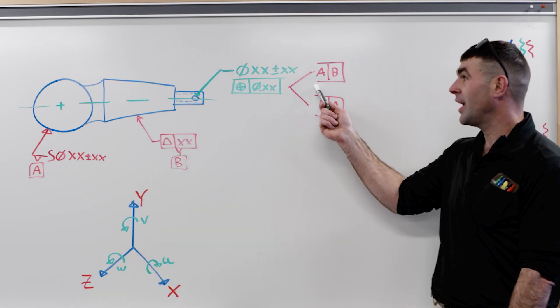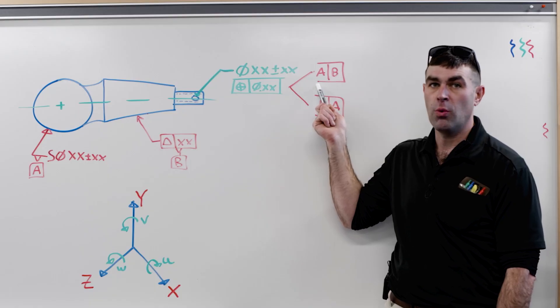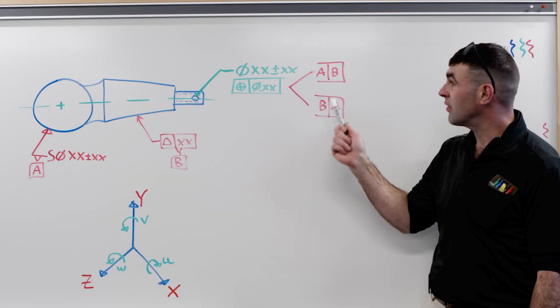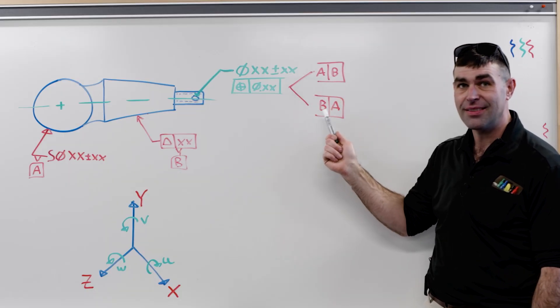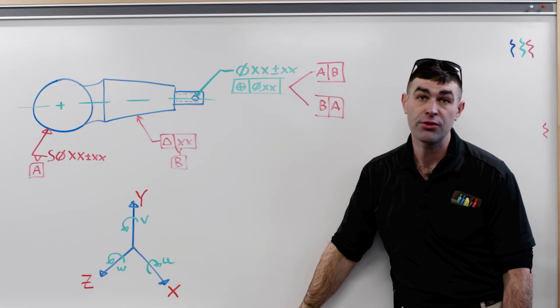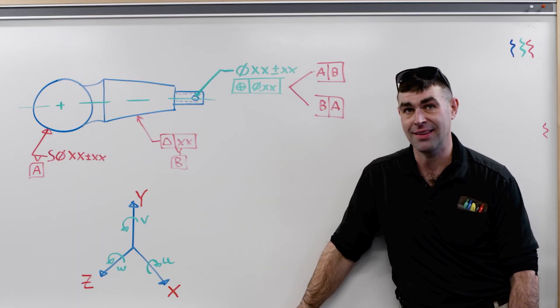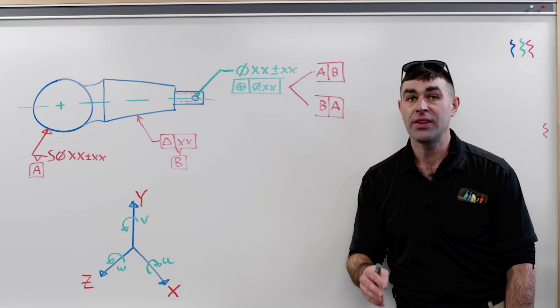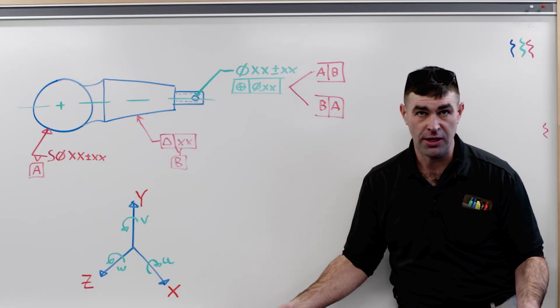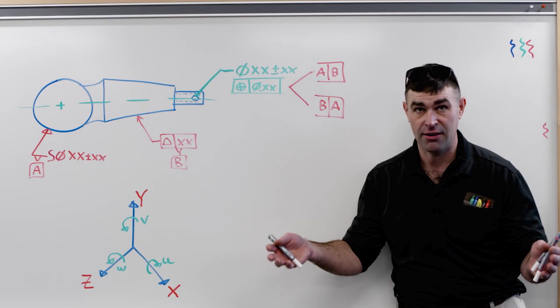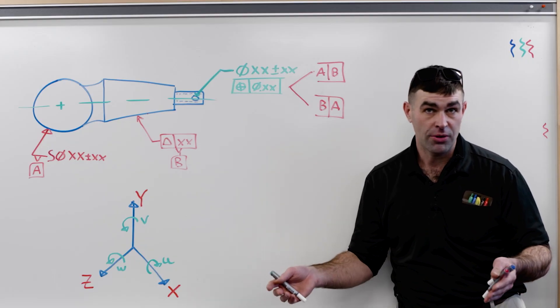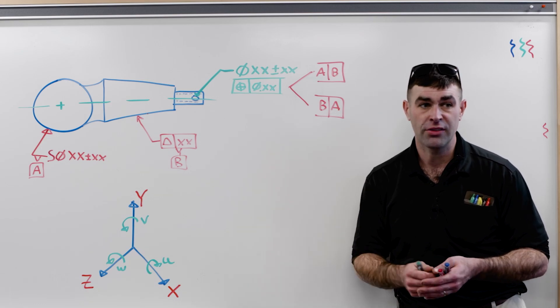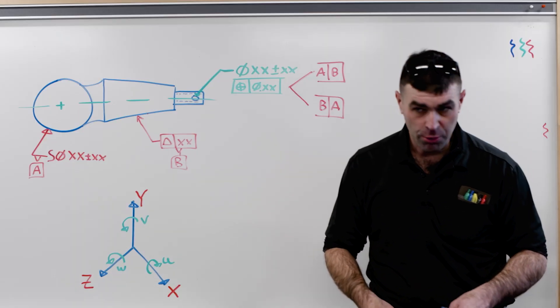Whenever we have datum references, they're going to take away these degrees of freedom. It depends where the datum reference is in the feature control frame as to how many degrees of freedom it's going to take away. And this is known as datum precedents. Different datum features will take away different degrees of freedom. For example, a simple surface plane feature creates a datum plane. If it's primary, it takes away three degrees of freedom: one translation and two rotations.